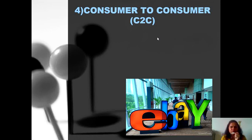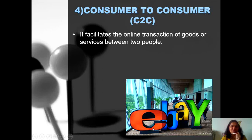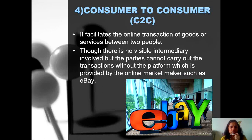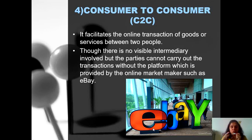The last type is Consumer to Consumer (C2C). Any consumer can create their product and deliver it to another consumer. One popular example is eBay. It facilitates online transactions of goods or services between people — no business or merchant is involved. Though there is no visible intermediary, parties still cannot carry out transactions without the platform provided by online marketplaces such as eBay, which provides only the platform.